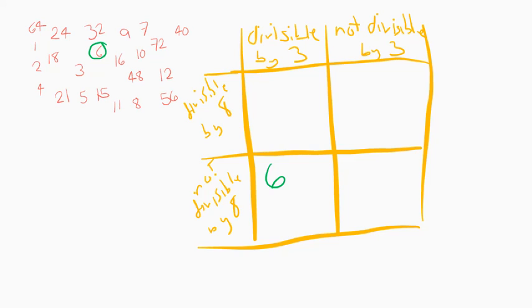Let's do a couple more examples. Next up, let's do 56. 56 is not going to be divisible by 3, but it is divisible by 8. So that means it's going to go in this box.